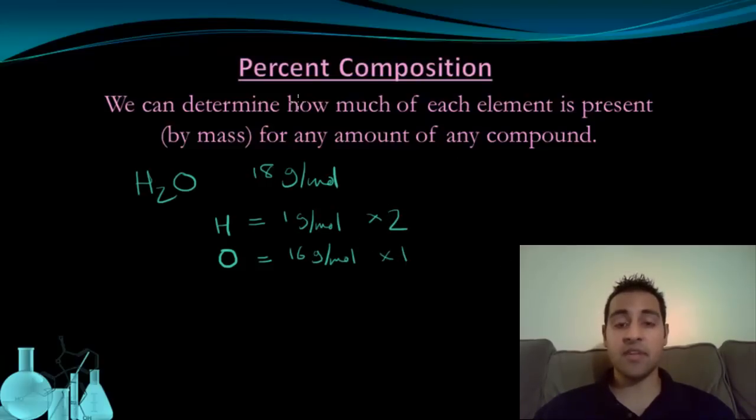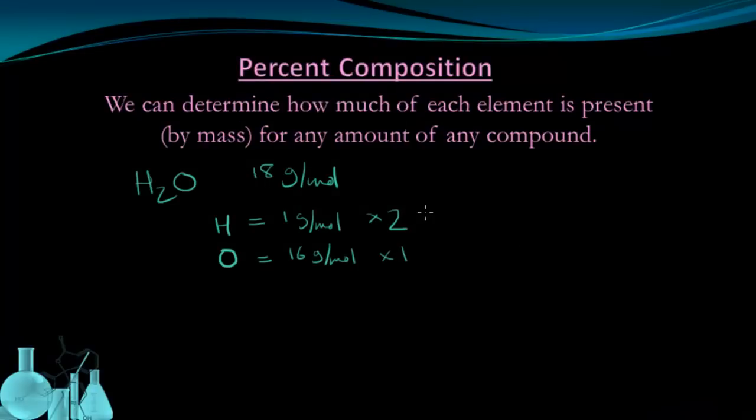Now, in this case, for Percent Composition, I'm interested in knowing what percentage of the water is hydrogen and what percentage by mass of the water is oxygen. So, for the hydrogen, I have 2 out of 18, because 1 times 2 gives me 2. That's the portion that's hydrogen. And the total is 18.